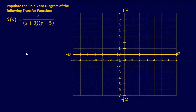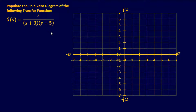For the first example, we're going to start with a relatively easy one. The problem says: populate the pole-zero diagram of the following transfer function. We have s over (s plus three)(s plus five). So we have one zero and two poles, which we can identify right away just by looking at it.